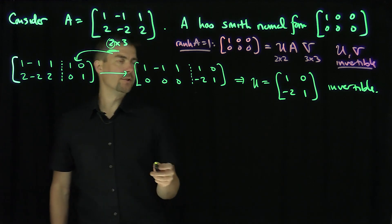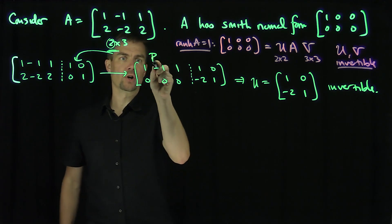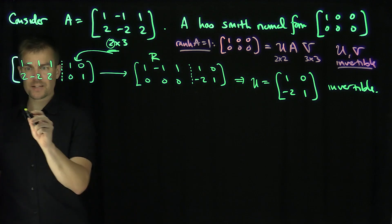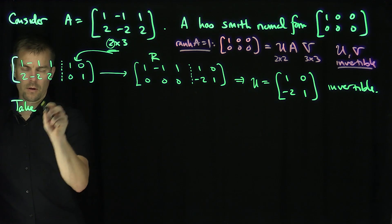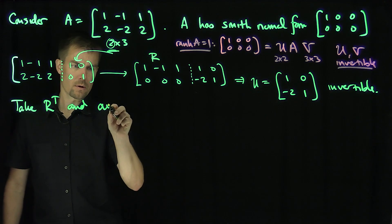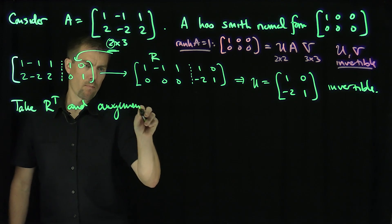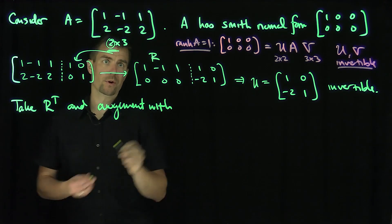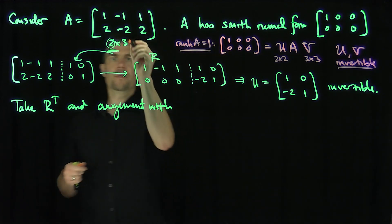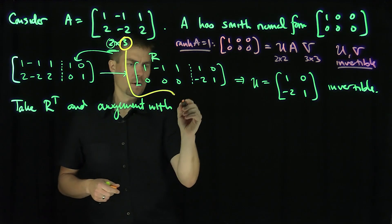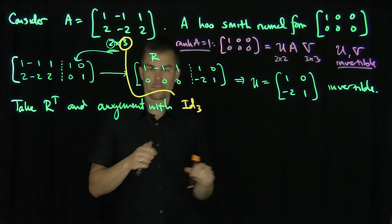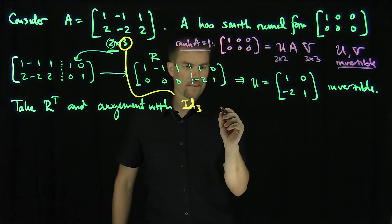This is my reduced row echelon form matrix R. Next, I'm going to take R transpose and augment it with the 3-dimensional identity — this is the column component of the decomposition.